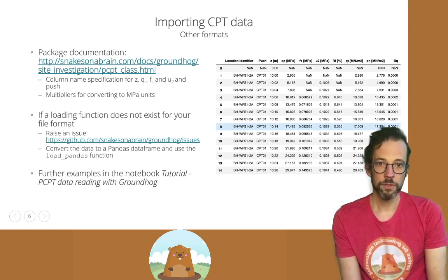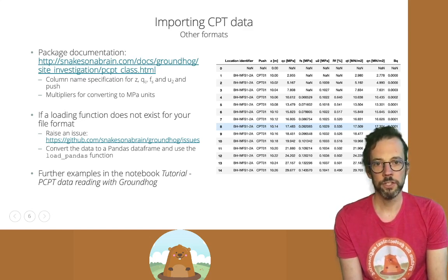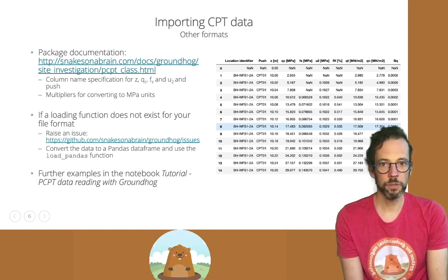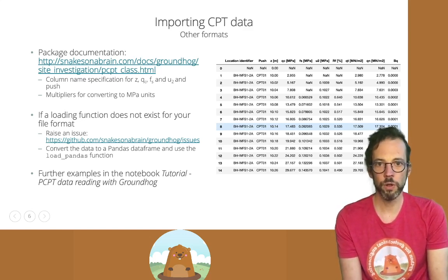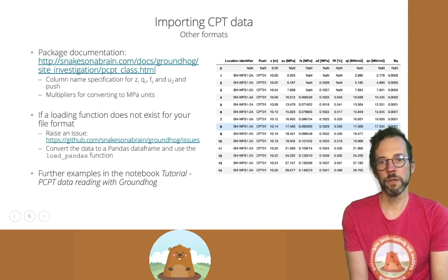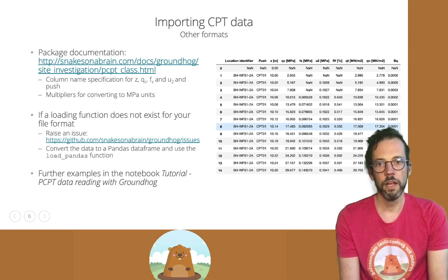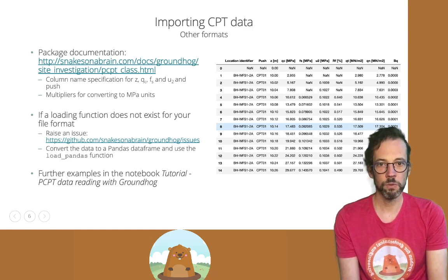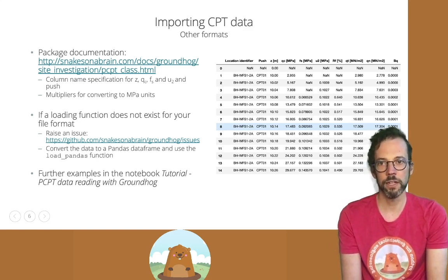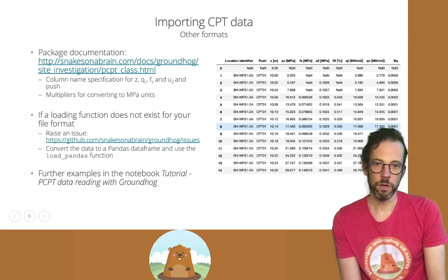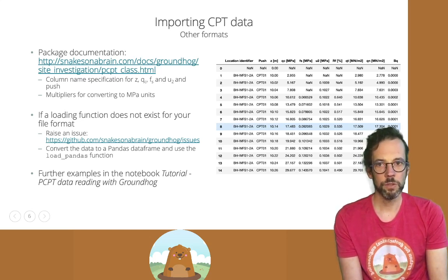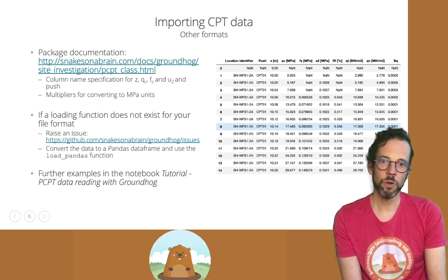There are other adapters available in Groundhog and you can check the documentation to see how they work — they follow the same principles as the load Excel method. There is an adapter for loading AGS data, GEF data, and other file formats commonly used offshore. If you have an ASCII file format with no adapter, you can open an issue on the GitHub repository. Alternatively, you can load data into a pandas dataframe and use the load pandas function to bring it into a PCPT processing object. A tutorial notebook is also available online in the binder link shown at the end.